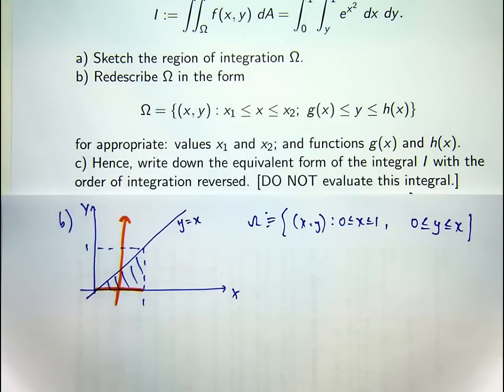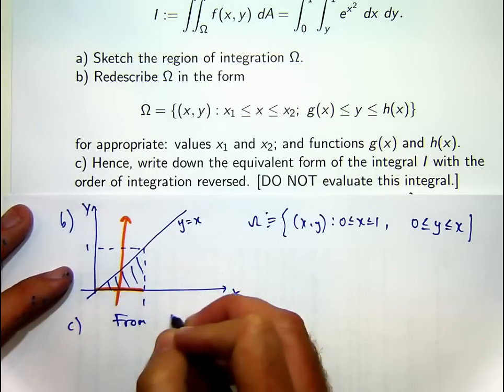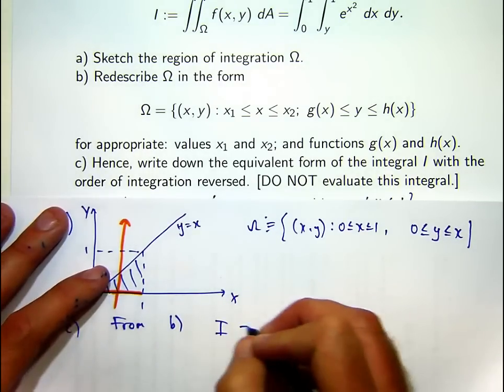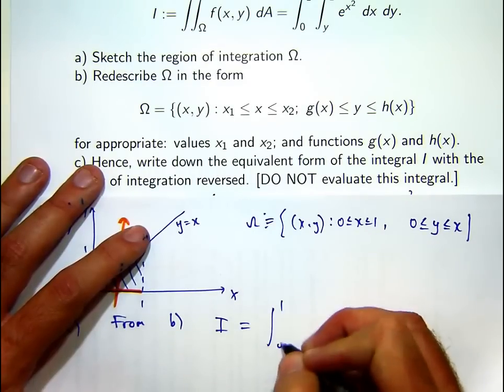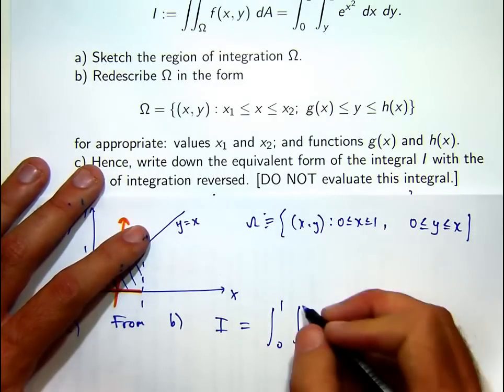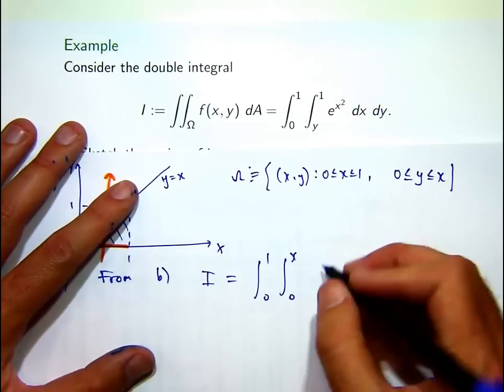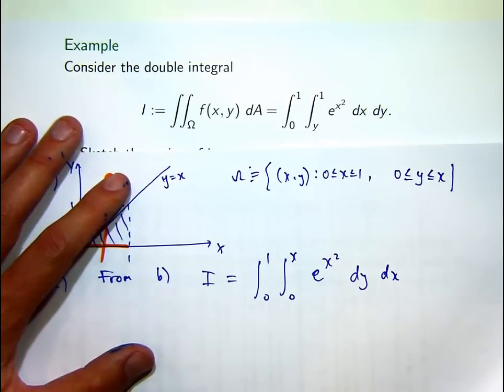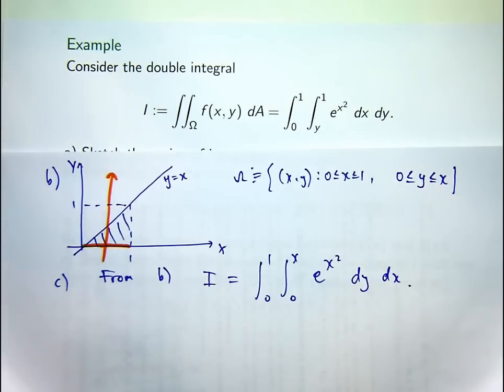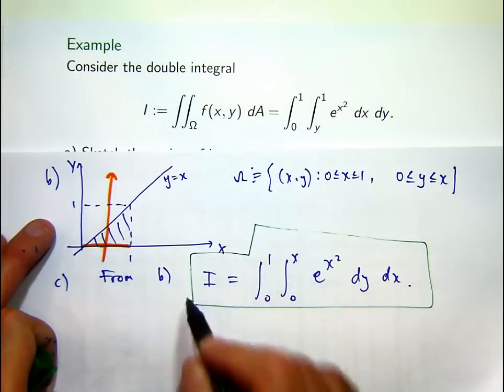So for part c. All right, so these are our limits of integration. The constants are on the outside. It's, of course, it's the same integrand. That would be our integral with the order of integration reversed.